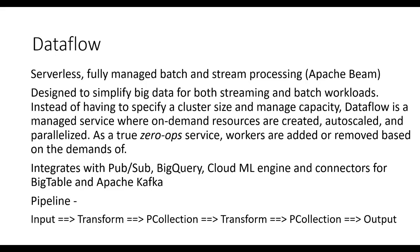The classic streaming pattern is Pub/Sub plus Dataflow: Pub/Sub streams the data, triggering a Dataflow pipeline which processes it and writes to BigQuery, which you can then use for dashboards. For batch, once data is present you trigger the pipeline from Compute Engine, Cloud Functions, or Pub/Sub. A typical pipeline has input as a PCollection, then transforms step by step — each intermediate result is also a PCollection — until you reach the output.